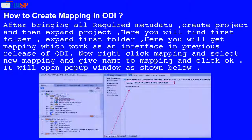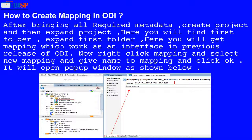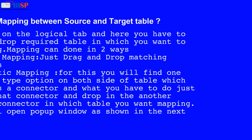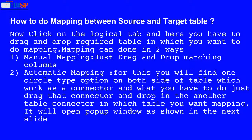After bringing all required metadata, create a project and then expand the project. Here you will find the first folder. Expand the first folder and here you will find Mapping, which works as an interface in previous releases of ODI. Now right-click Mapping and select New Mapping, give a name to the mapping, and click OK. It will open a popup window as shown below.